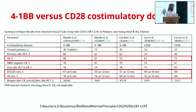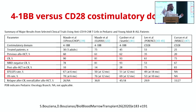Regarding the type of co-stimulatory domain: looking at five studies using different types, the first three using 4-1BB and the last two using CD28 — the CR rate is lower in studies using the CD28 domain. Event-free and overall survival are also lower with CD28. Based on this, some guidelines recommend considering transplant as consolidation post-CAR-T when using the CD28 co-stimulatory domain.